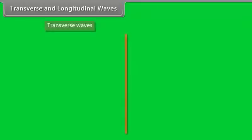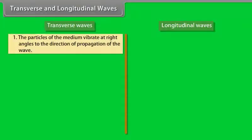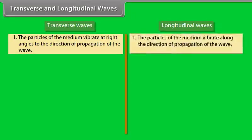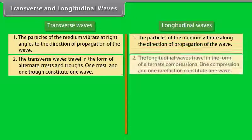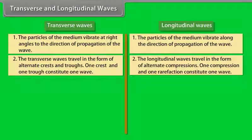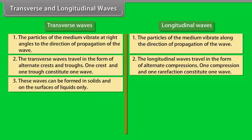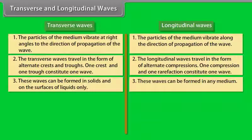Let's make the difference between transverse waves and longitudinal waves. Number 1: In transverse waves, the particles of the medium vibrate at right angles to the direction of propagation of the wave, whereas in longitudinal waves the particles of the medium vibrate along the direction of propagation of the wave. Number 2: Transverse waves travel in the form of alternate crests and troughs — one crest and one trough constitute one wave — whereas longitudinal waves travel in the form of alternate compressions and rarefactions — one compression and one rarefaction constitute one wave. Number 3: Transverse waves can be formed in solids and on the surface of liquids only, whereas longitudinal waves can be formed in any medium.